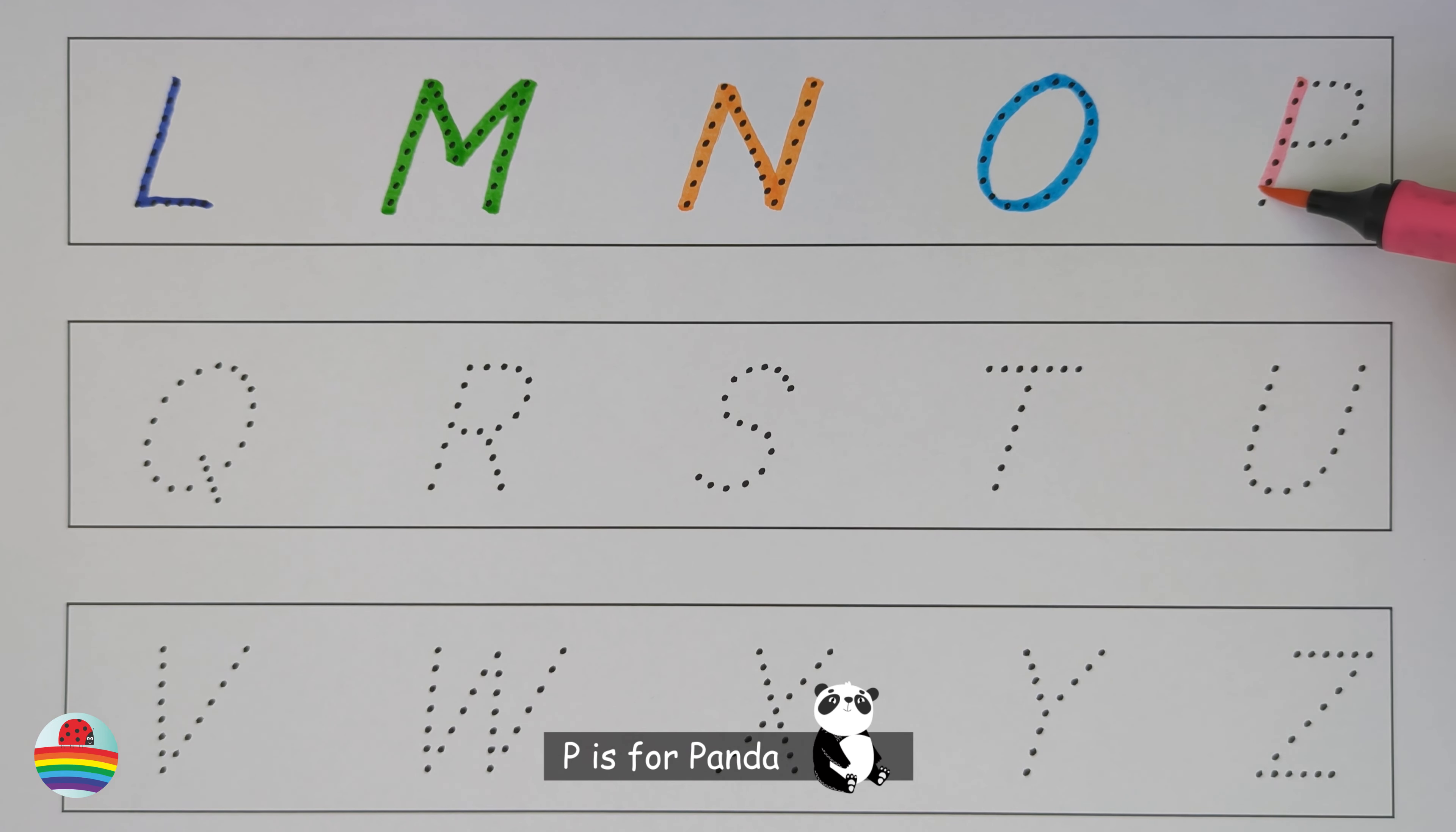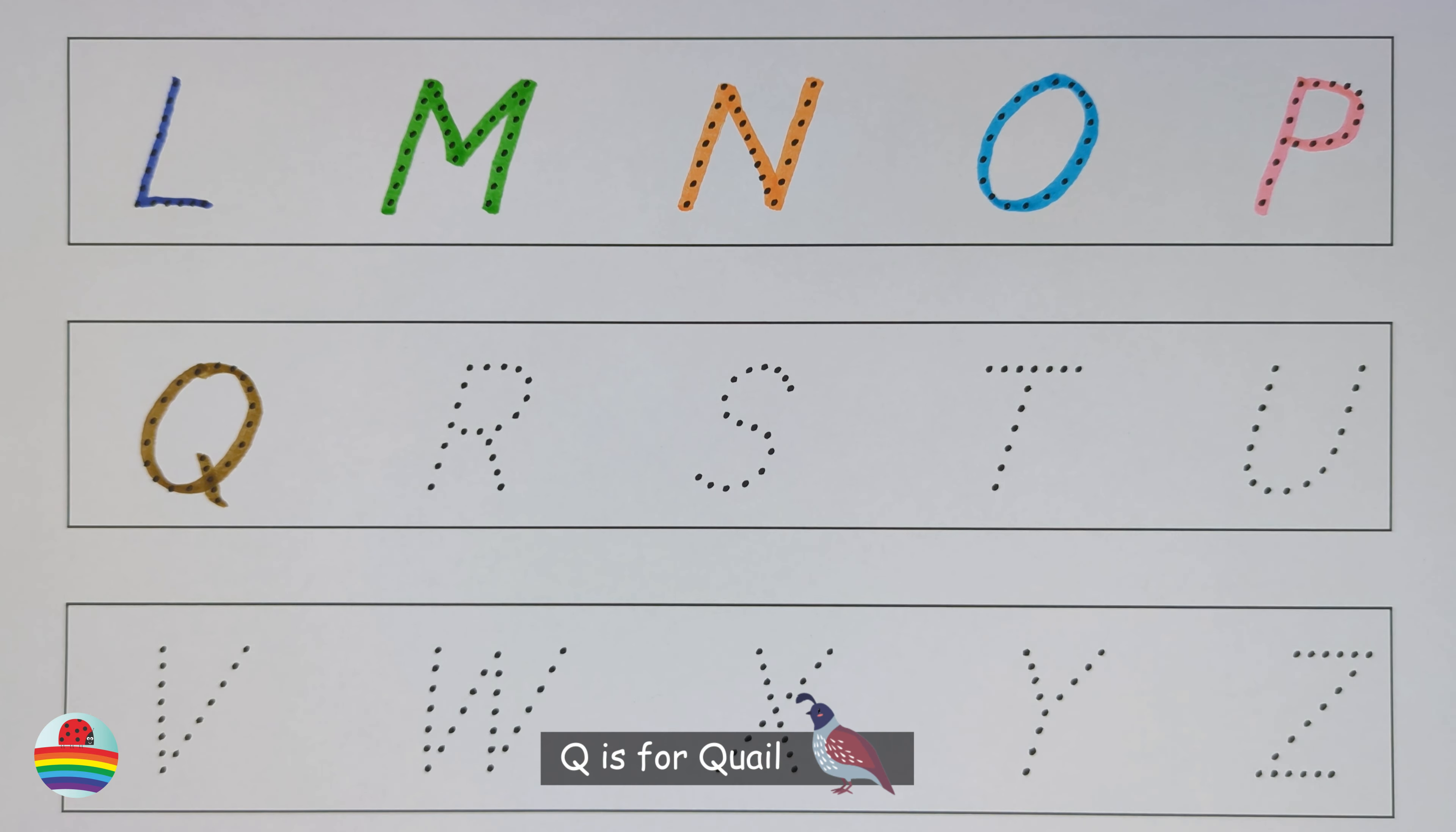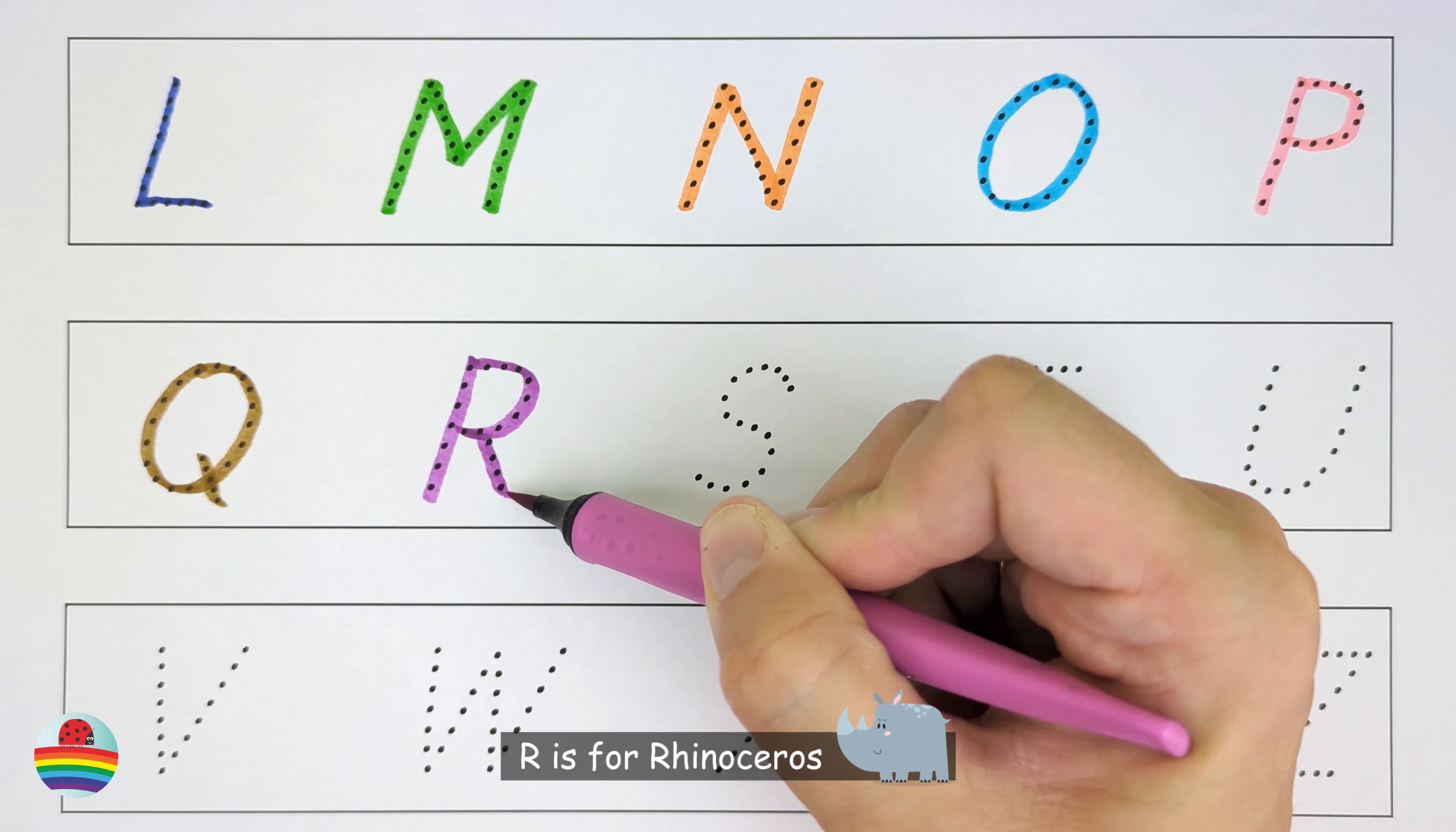P. P is for panda. P. Q. Q is for quail. Q. R. R is for rhinoceros. R.